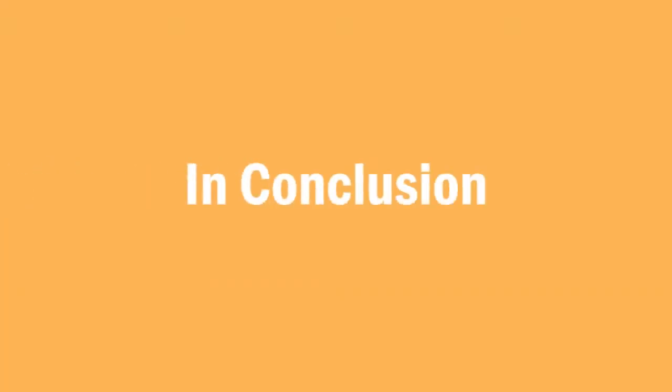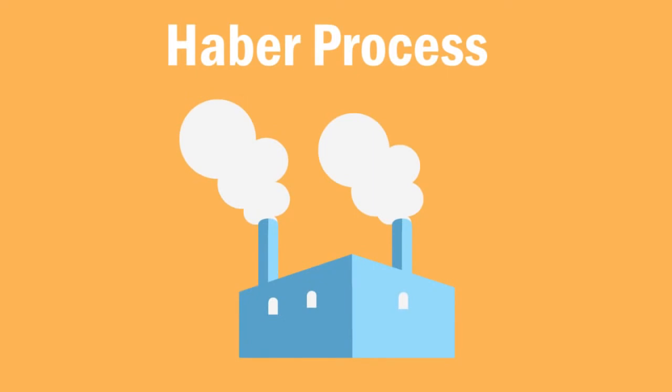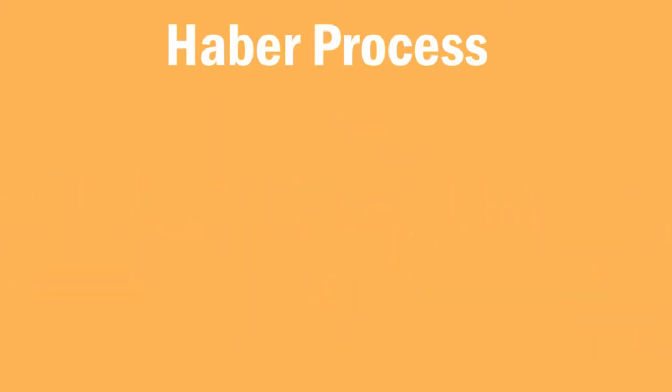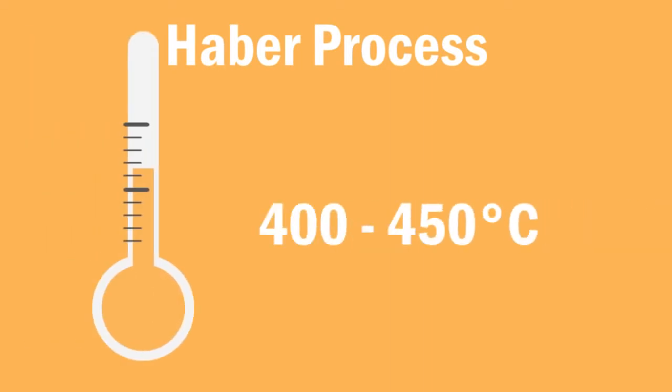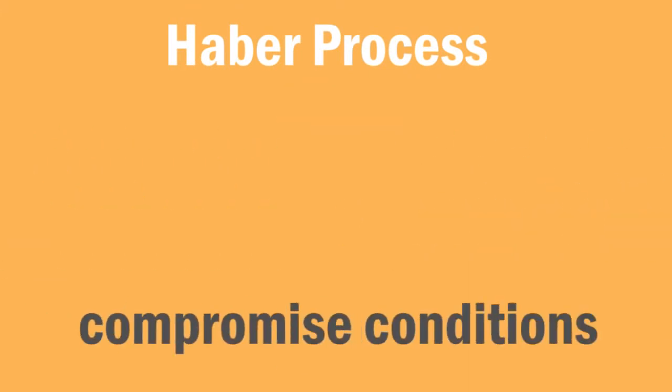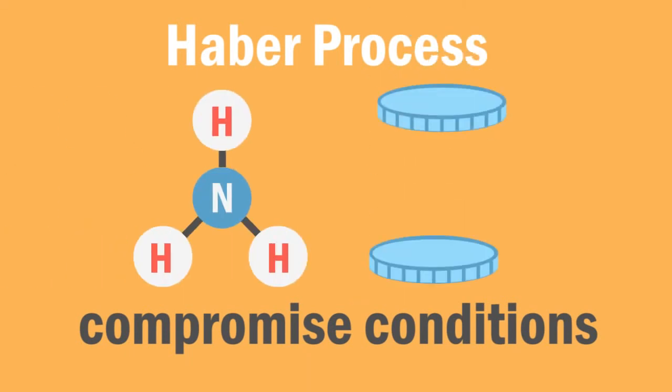In conclusion, the Haber process is the industrial process to produce ammonia from hydrogen and nitrogen. It is conducted at 400 to 450 degrees Celsius and at 200 atm in the presence of an iron catalyst. These are compromised conditions in order to maximize ammonia production and economic profit.